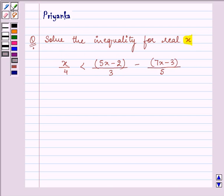Now here we need to find the value of x and the inequality given to us is x by 4 is less than 5x minus 2 divided by 3 minus 7x minus 3 divided by 5.